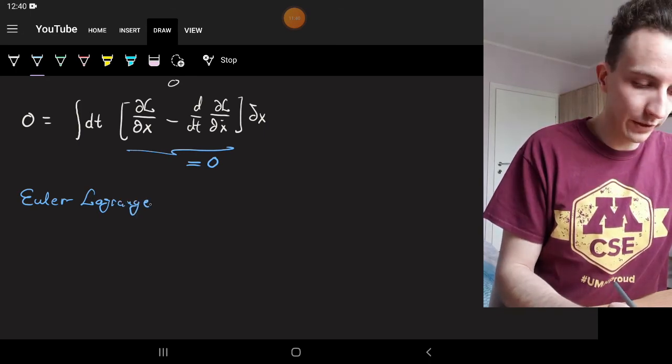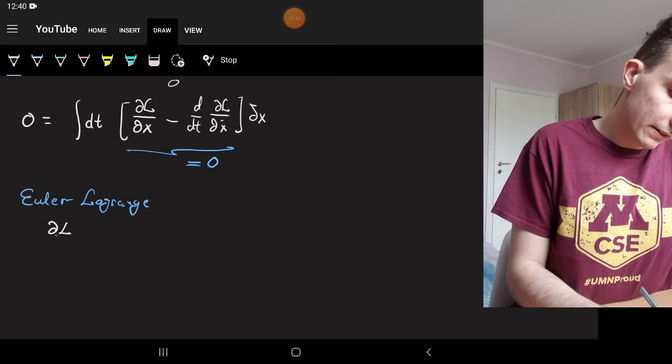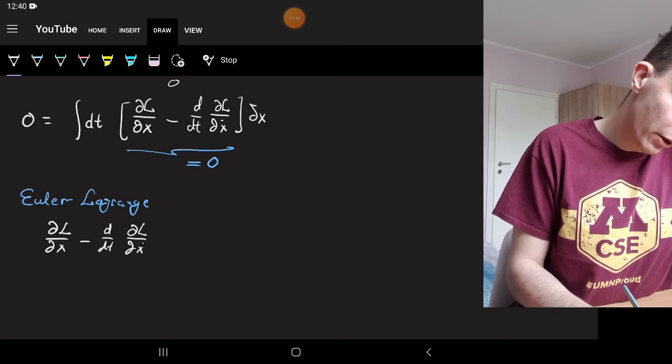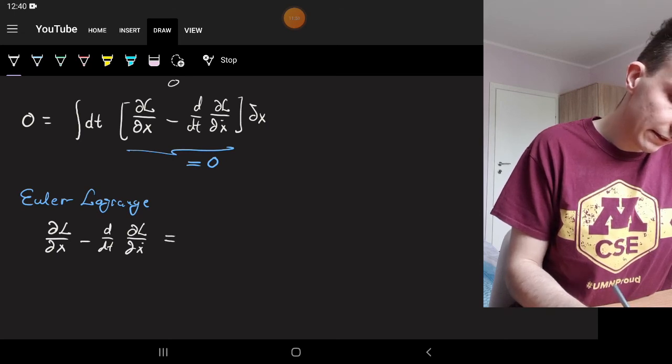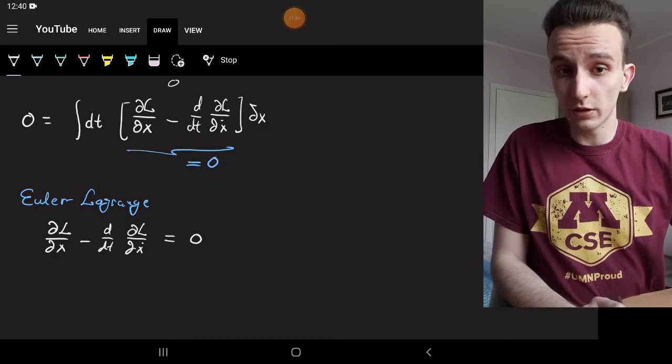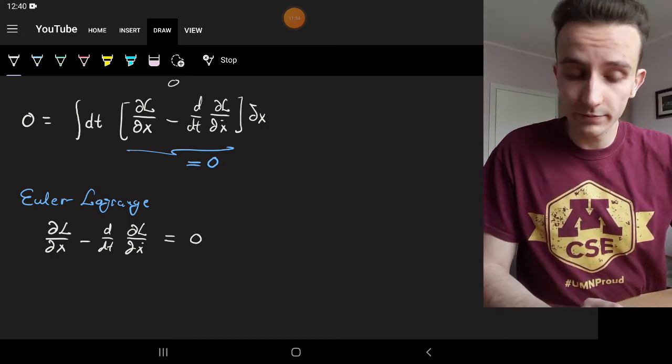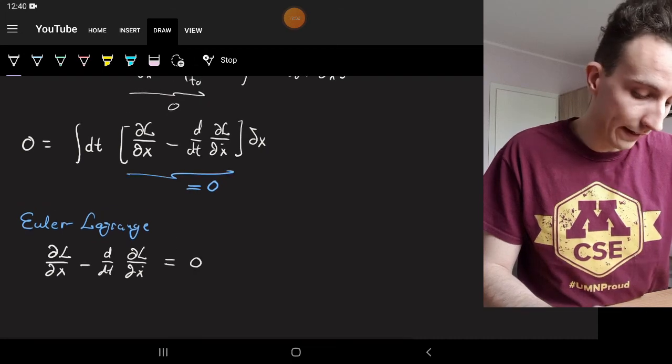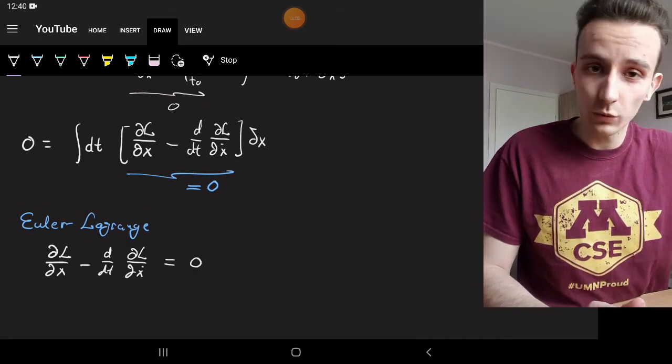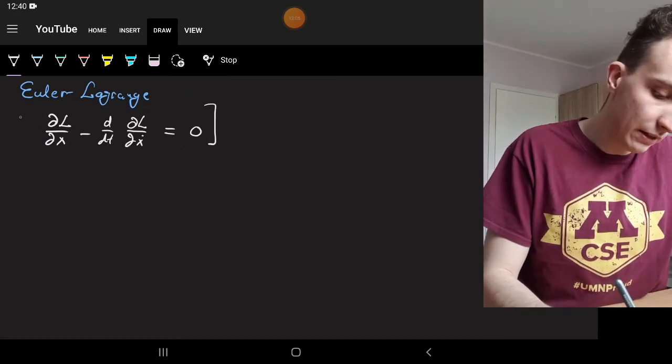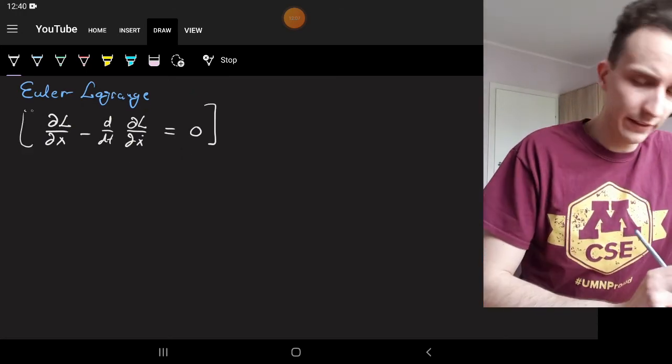Euler-Lagrange equation: partial L partial x minus d by dt partial L partial x dot equals 0. This is the result that we were looking for. All the stuff up there is the explanation of why we get what we get. And we'll be using this as a result in the next few videos.